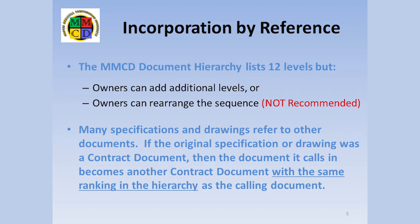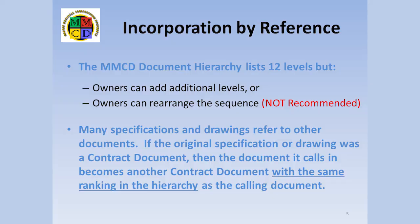Earlier, I mentioned that some documents refer to others which make those others contract documents too. I'm occasionally asked at what level these reference documents appear in the hierarchy. The short answer is that they come in at the same level as the document which called them in. For example, if a supplementary specification refers to a CSA standard, that CSA standard comes in at the level of a supplementary specification. The only time this gets a bit confusing is when a contract document calls in a document of another type. Just keep the same principle in mind — the other type does not matter. The new document comes in at the rank of the calling document.